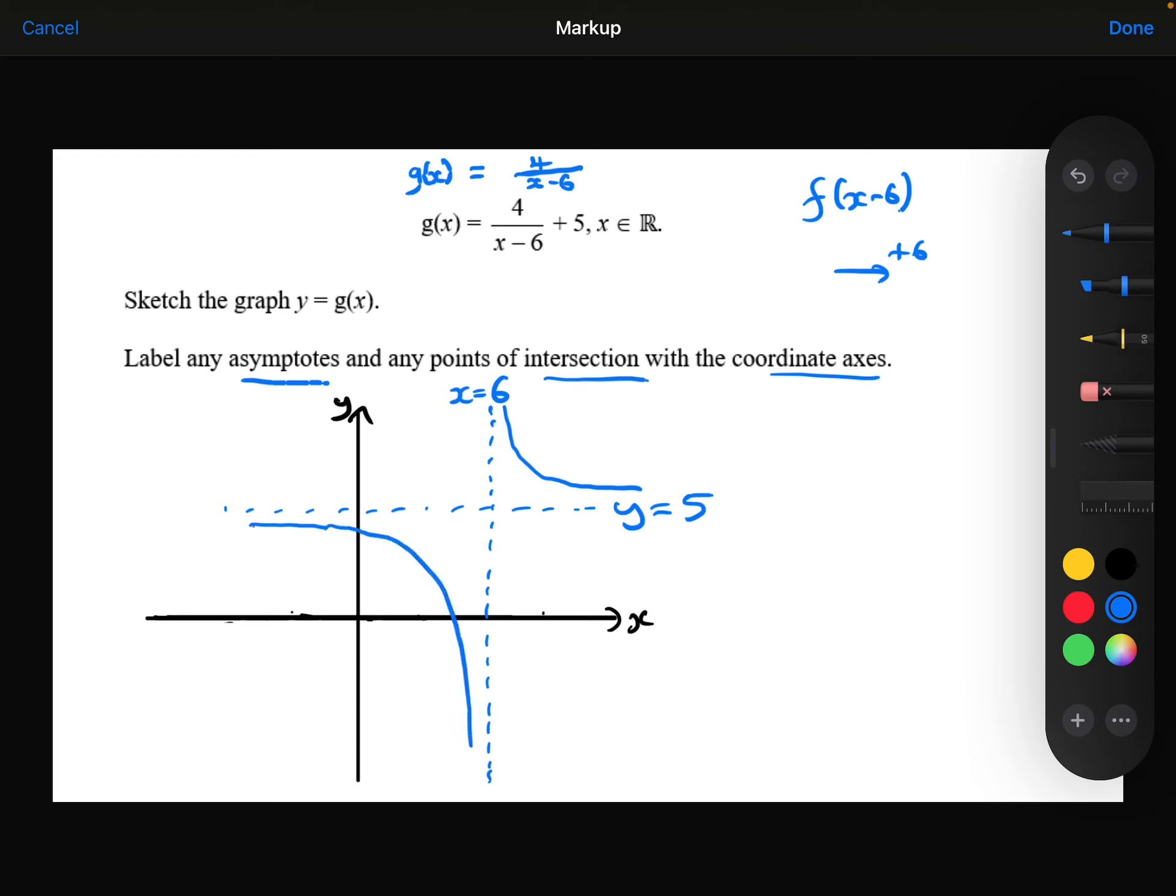So we've got the plus 5, we've dealt with the 4, we've dealt with the minus 6. I have marked on my asymptotes, but I do need to mark on the y-intercept as well and the x-intercept. I need to mark on both of those coordinates.